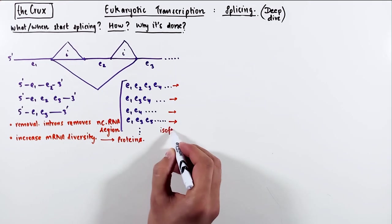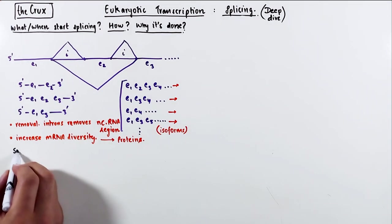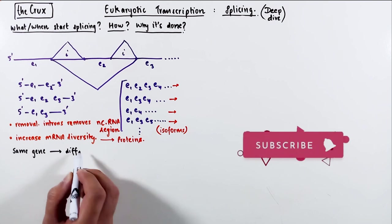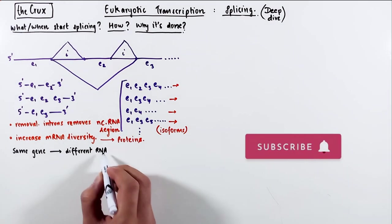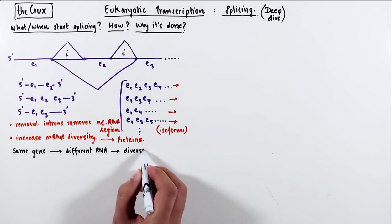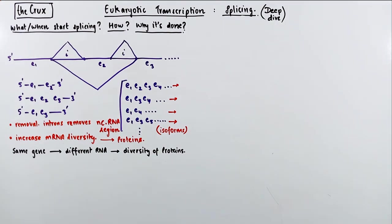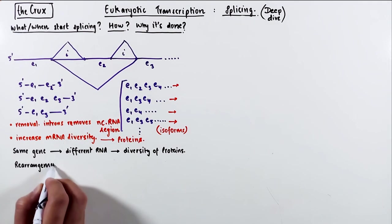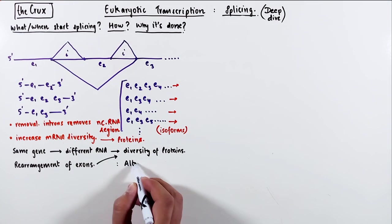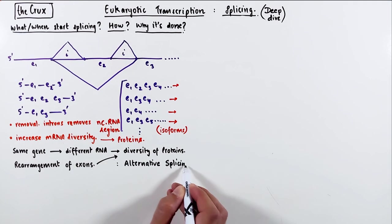And for your note, these diverse RNAs are called isoforms. So the same gene can be used to make different RNAs by joining exons in very different combinations. And this increases the diversity of proteins a typical cell can produce. This rearrangement of exons to give rise to isoforms is called alternative splicing.